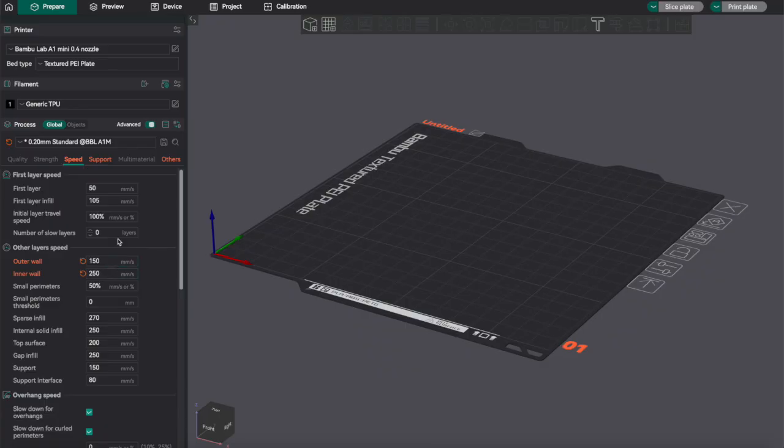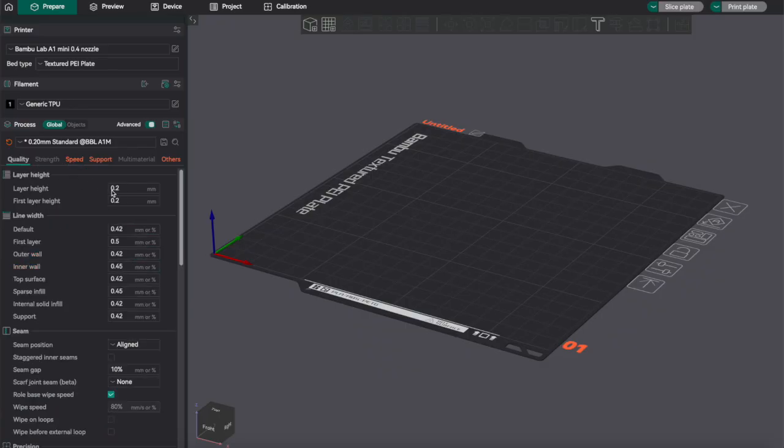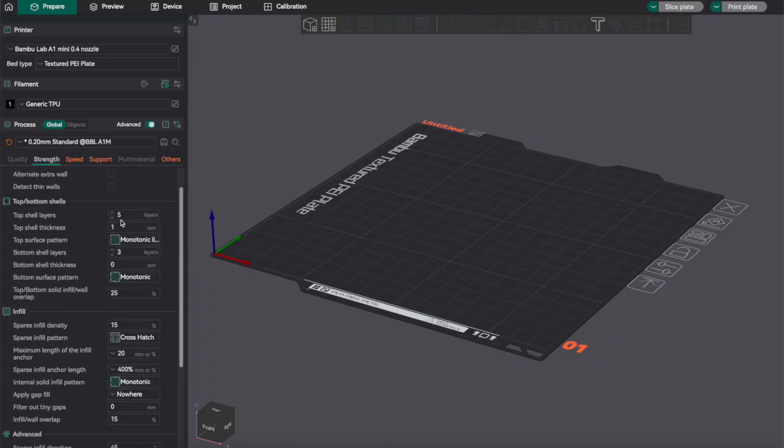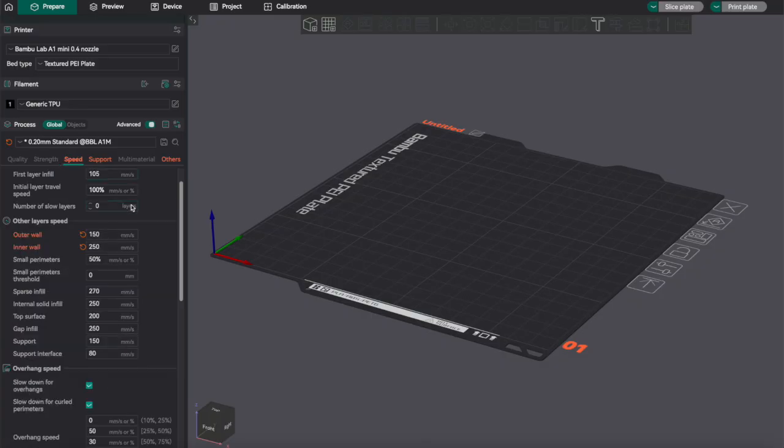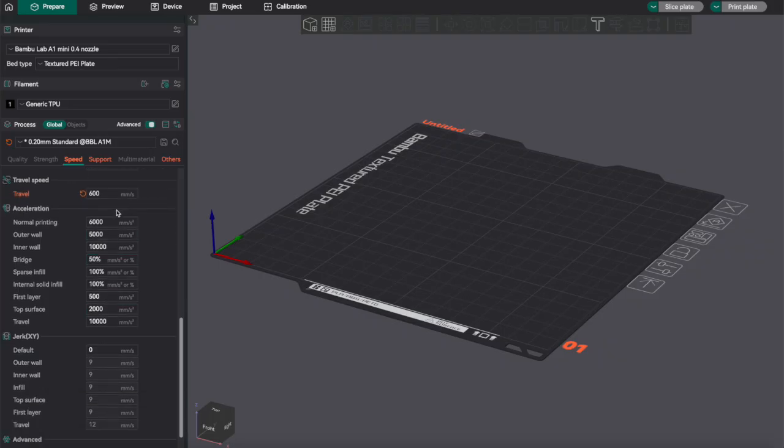Basically, in the quality, I haven't changed too much here. My layer height is 0.2 millimeters, and seam position is aligned. For strength, since everything is just one layer, you're not going to really have to worry too much about infill or wall loops or anything like that. And then for my speed, I actually just kind of lower things down roughly 50 millimeters per second from stock. So I went from 200 to 150 on the outer wall, 300 to 250 on the inner wall, although there's really not any inner walls. And then for the travel speed, if you're printing multiple of these, I actually went down from 700 millimeters per second to 600 millimeters per second.